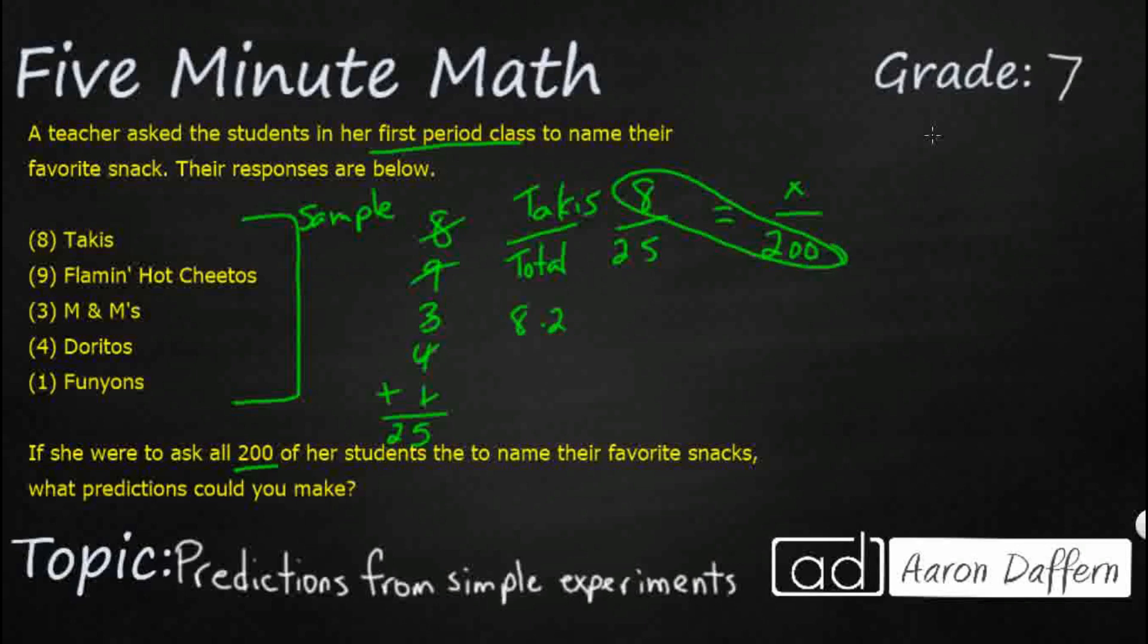8 times 200 is going to equal 25x, right? So that's going to be 1600 = 25x, divide both sides by 25 and we could do that to get our answer. But what's going to be a little bit easier, x is going to equal 64.